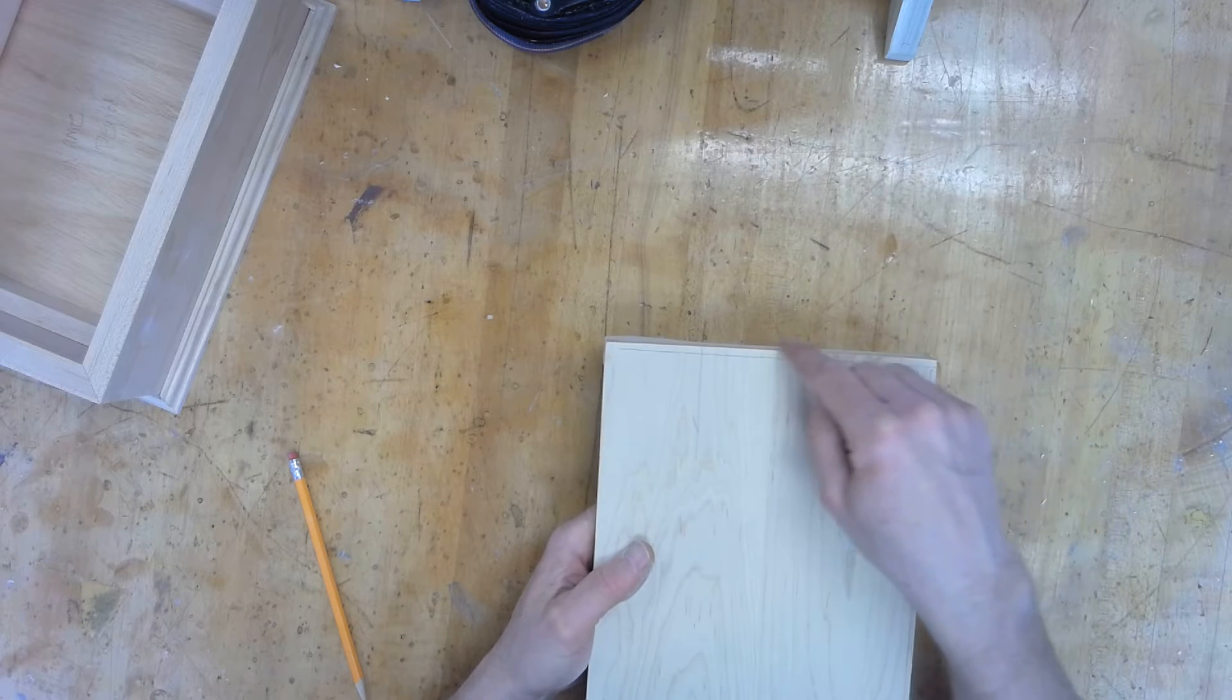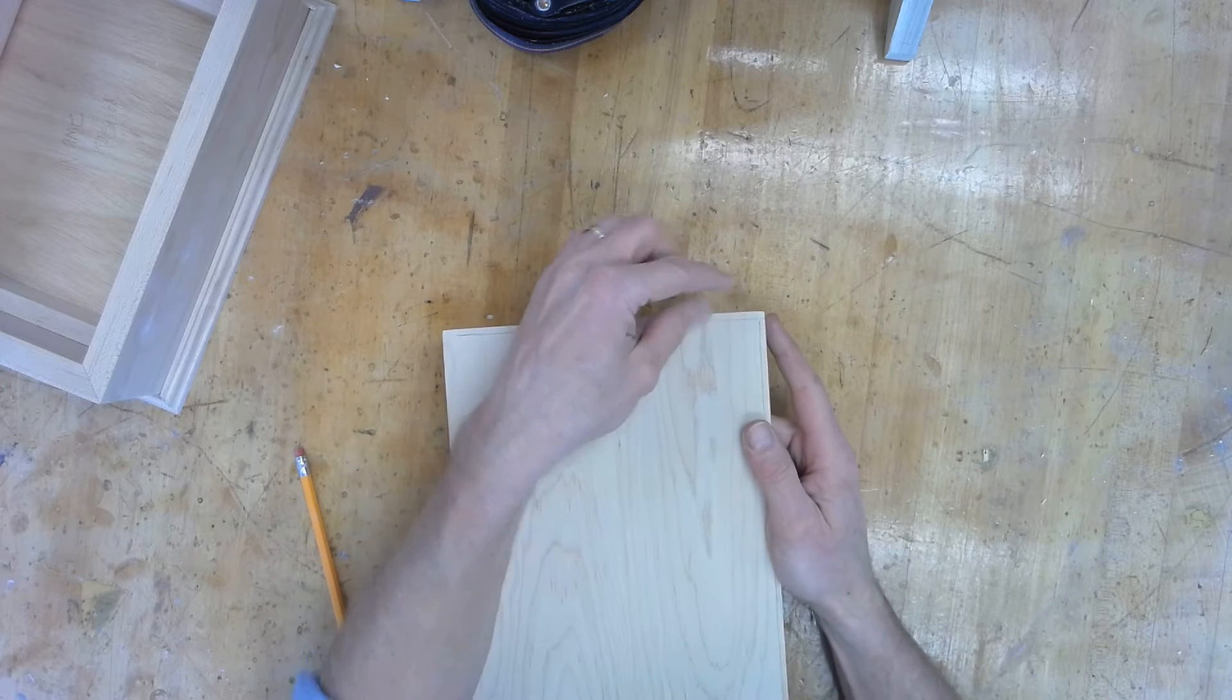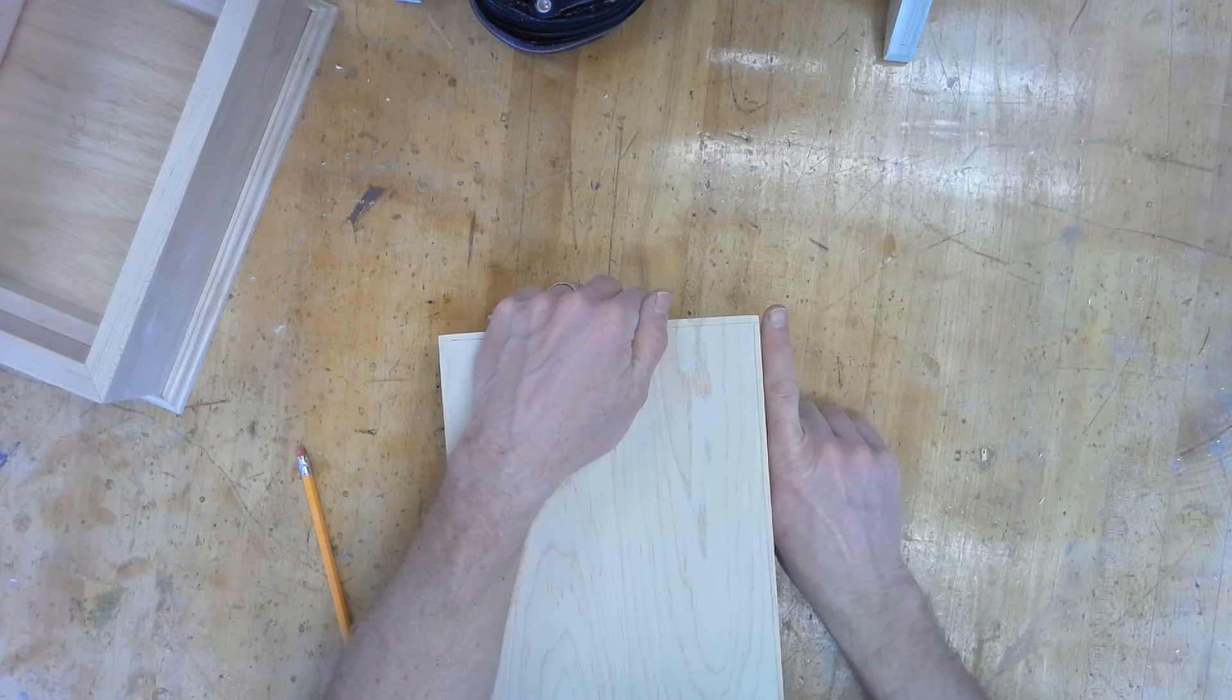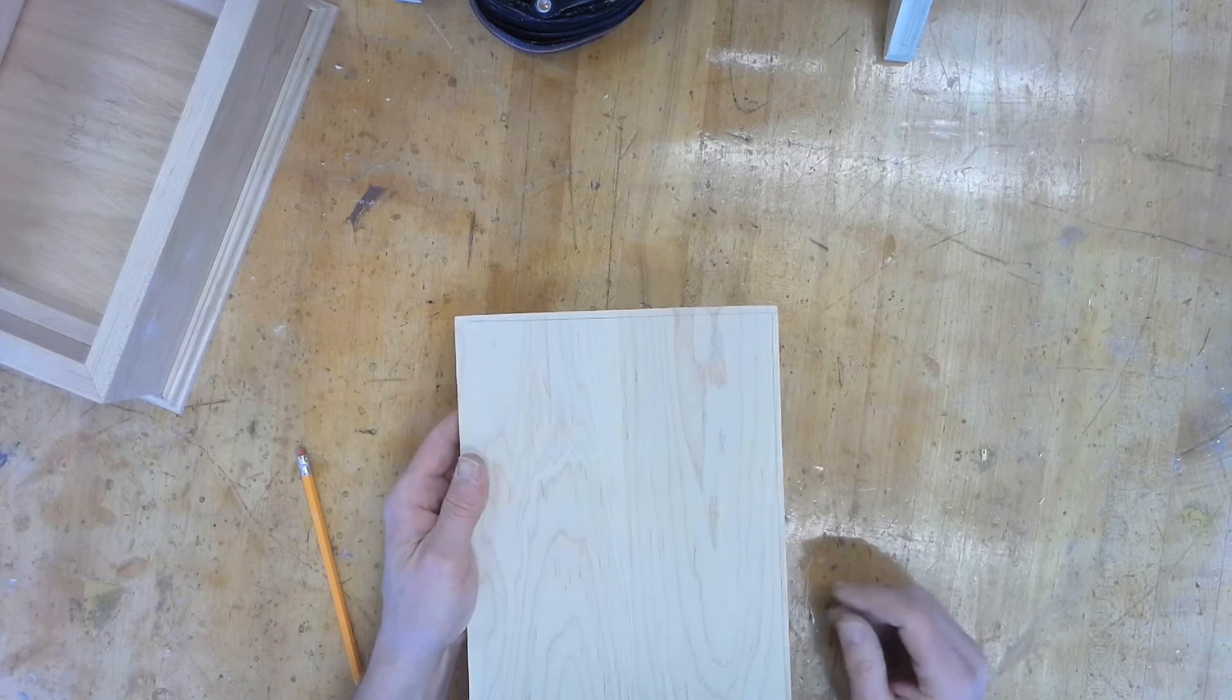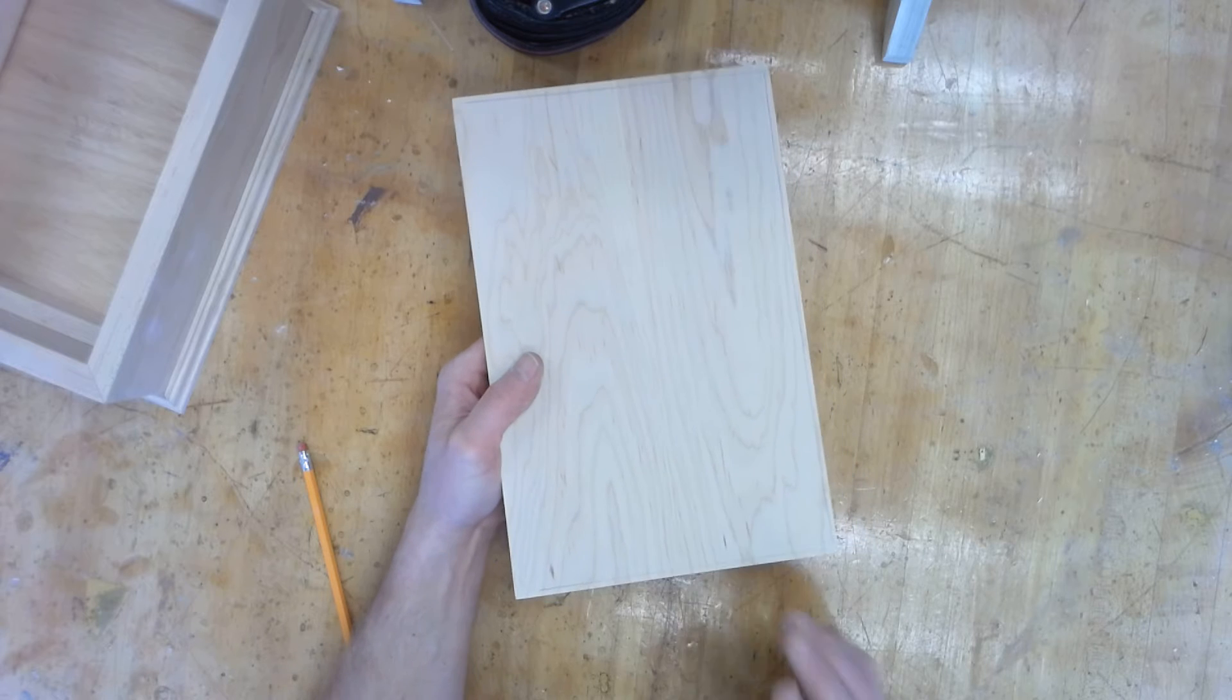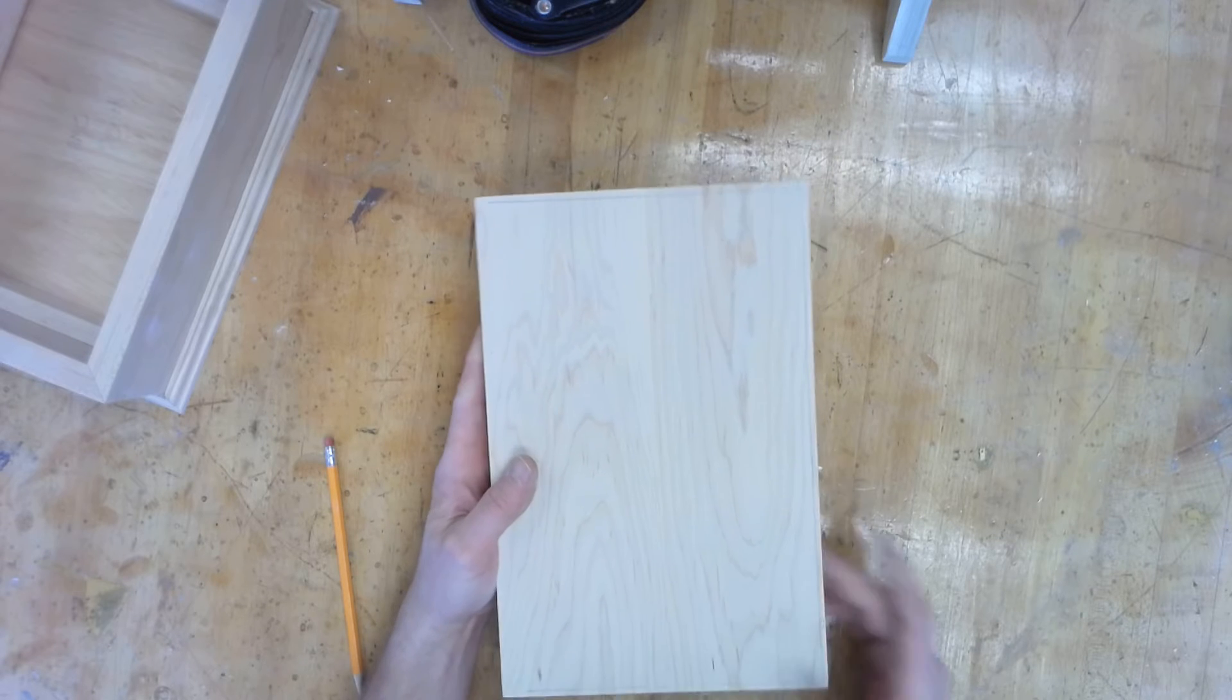If we're going to router end grain, what happens when we go across? These wood fibers here, they're going to want to tear out, they're going to want to go this way. So we want to put a support stick here when we're routering to avoid tear out. So we always do the end grain first.